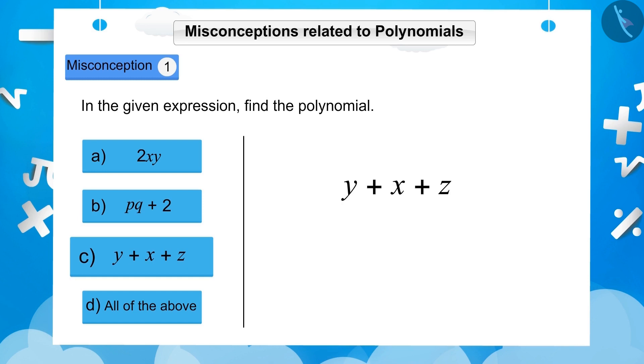c, y plus x plus z. If you observe option c, then you will find that this expression y plus x plus z has three terms, which is joined together. Hence, this is a trinomial and it is also a polynomial.